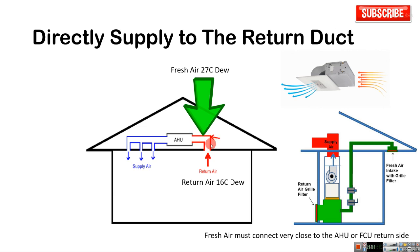You can see water droplets at the return air diffusers if the connection is not close enough. You must connect the fresh air duct very close to the return side of the FCU. This is the return side of the FCU — connect very close to it. Then any condensate water will be removed through the condensate drain.